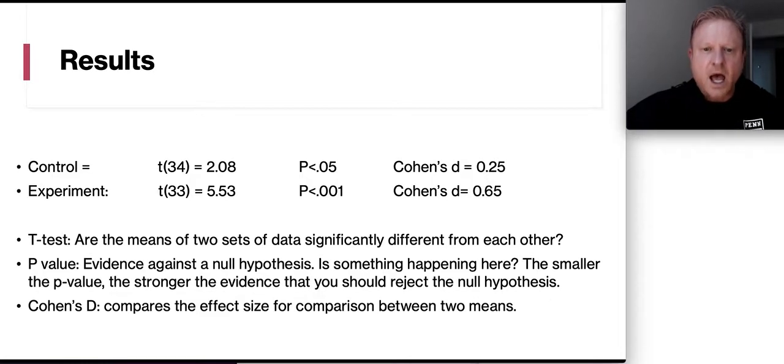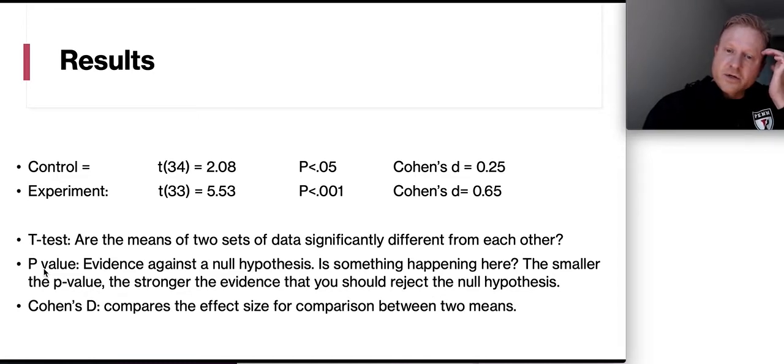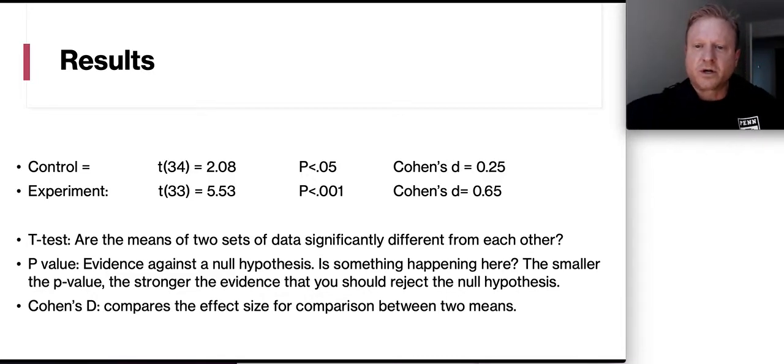So the t-test is asking, are the means of the two sets of data significantly different from each other? So the control group had 34 people. The experiment had 33. Their t-test was 2.08 experiment, 5.53. So yeah, very different. And remember the p-values. Evidence is looking against the null hypothesis. Is something happening here? The smaller the p-value, the stronger the evidence that you should reject the null hypothesis. So the control group was actually significant. It's a low number. It's less than .05. But the experimental group, less than .001. So that's really negating the null hypothesis.